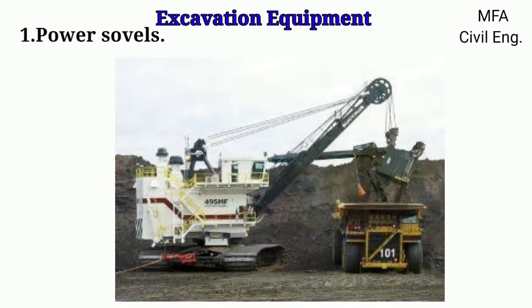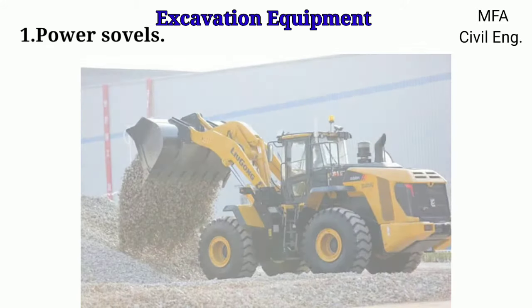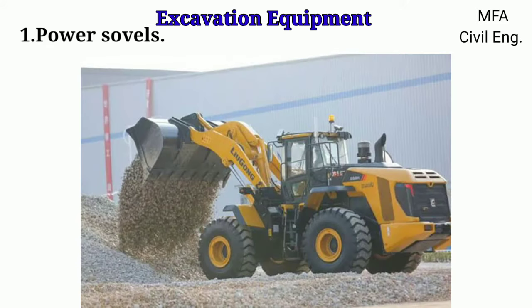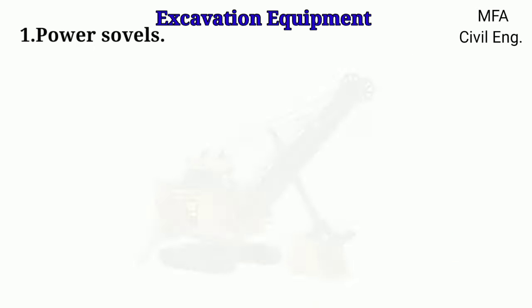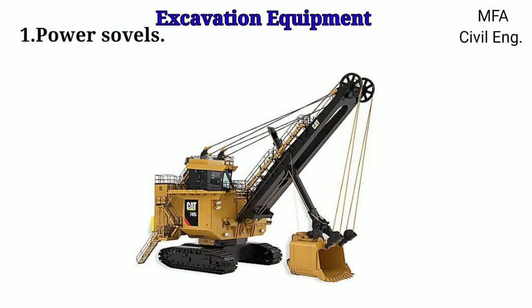Crawler mounted shovels have a low speed but are very effective in unstable soil. On the other hand, wheel mounted shovels have a high speed and are effective only for firm ground.